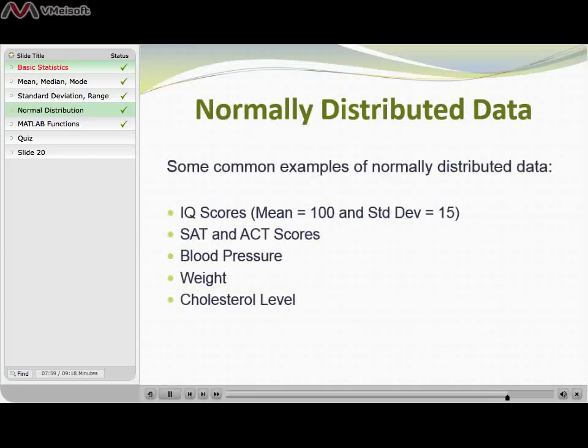There's lots and lots of data that is normally distributed data. We already talked about IQ scores. SAT and ACT scores, blood pressure, weight, cholesterol level—many many different examples of data that is normally distributed.